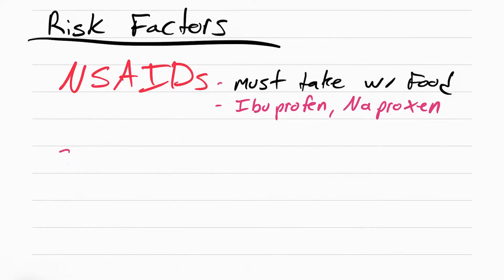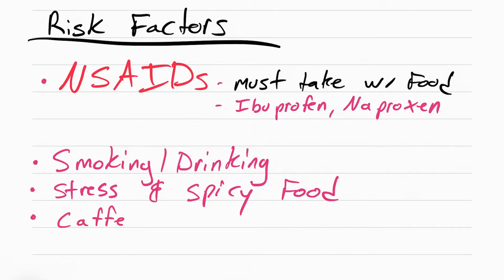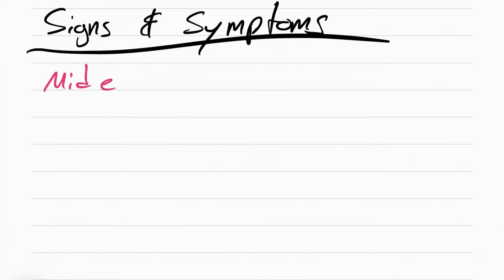You have to make sure that patients take these medications with food to prevent the erosion of the lining of the stomach. Other risk factors include smoking, drinking, stress, spicy food, caffeine, and chocolate. The patient's going to experience pain. There's two types of ulcers that you need to know.